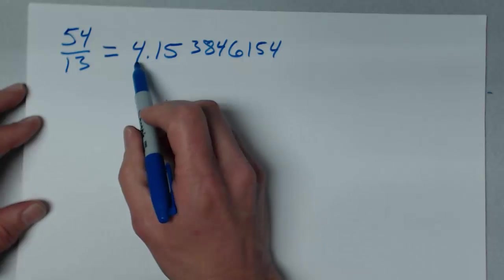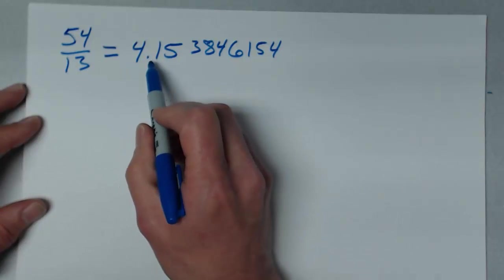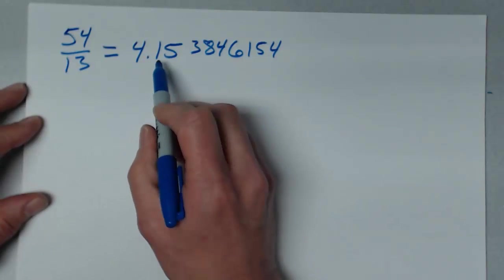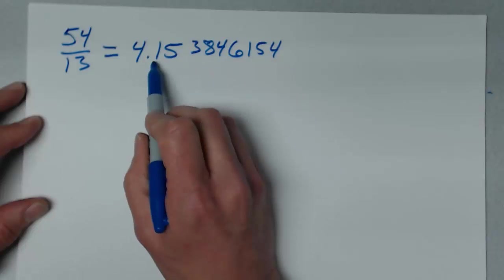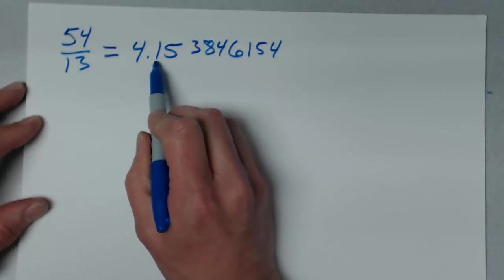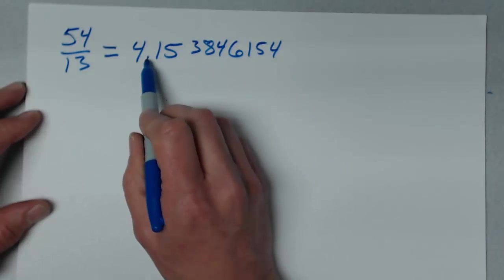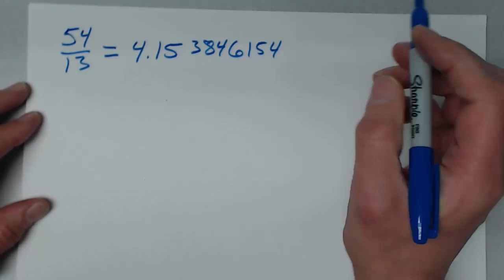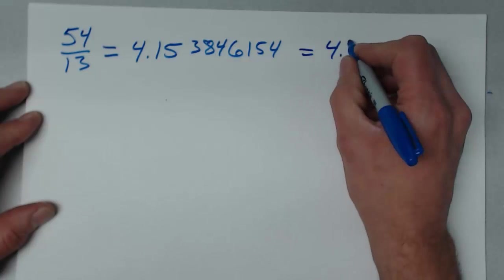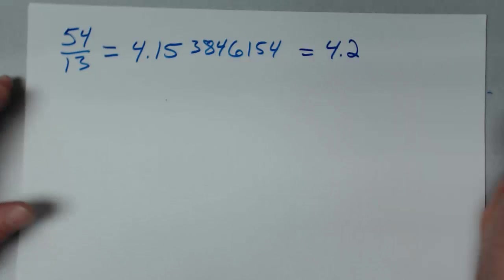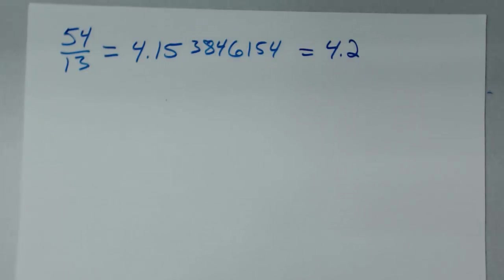So it'll be four point something. The 1538... I would round up to .2, and so this just becomes 4.2. It would be a lot less work if I would just write it that way from the start.